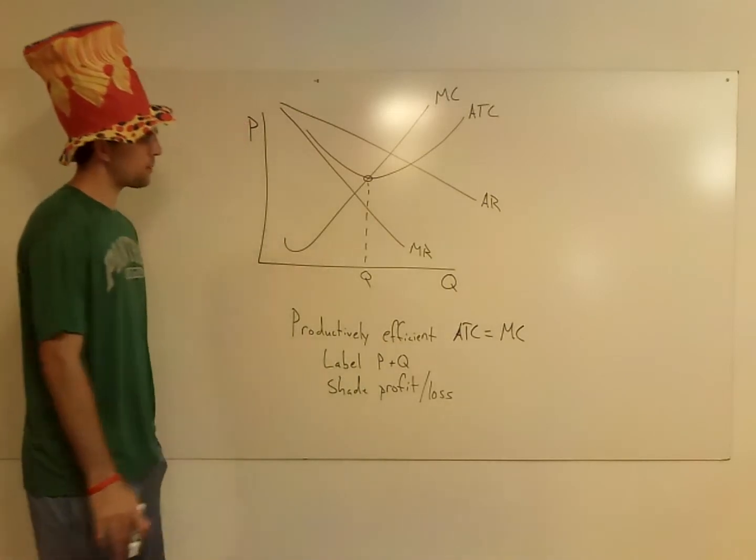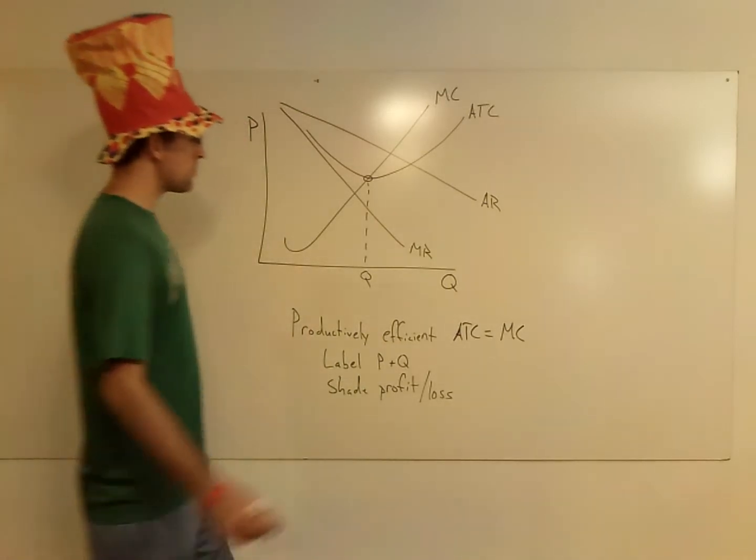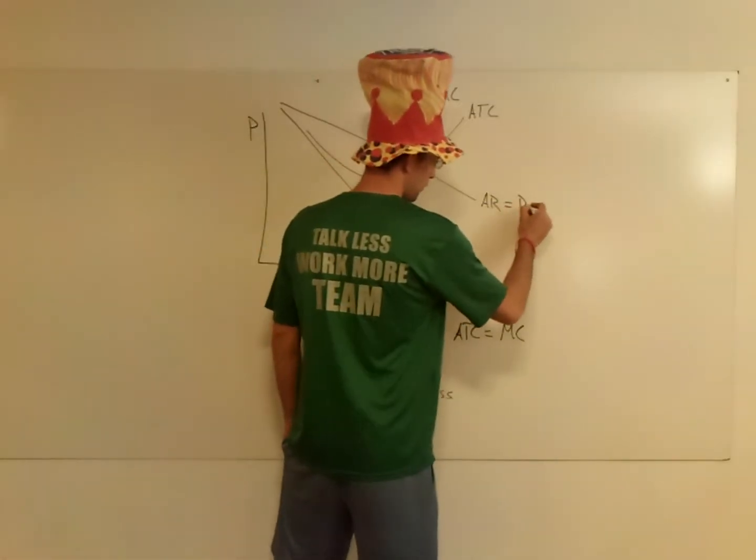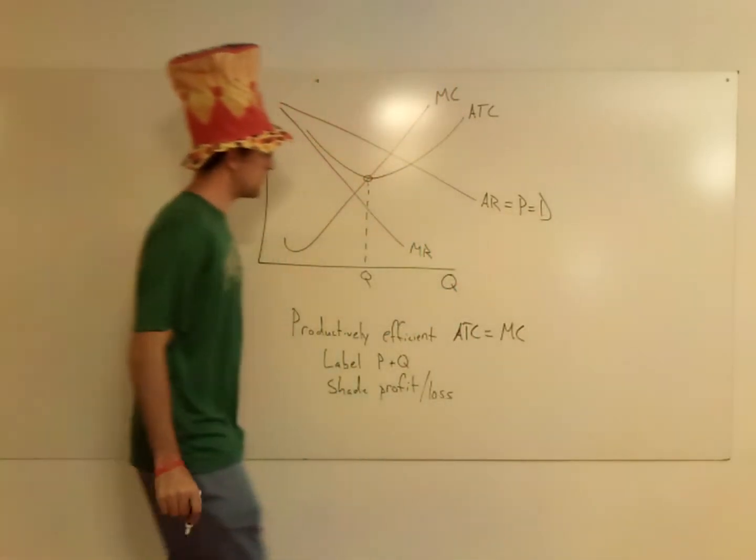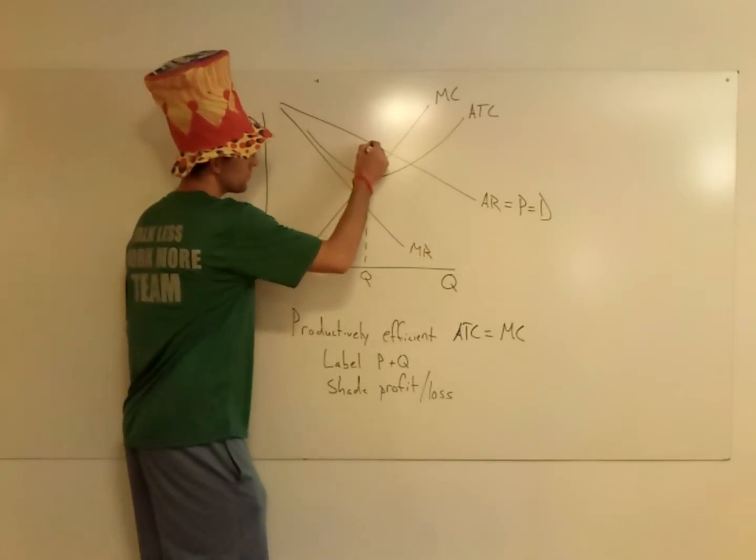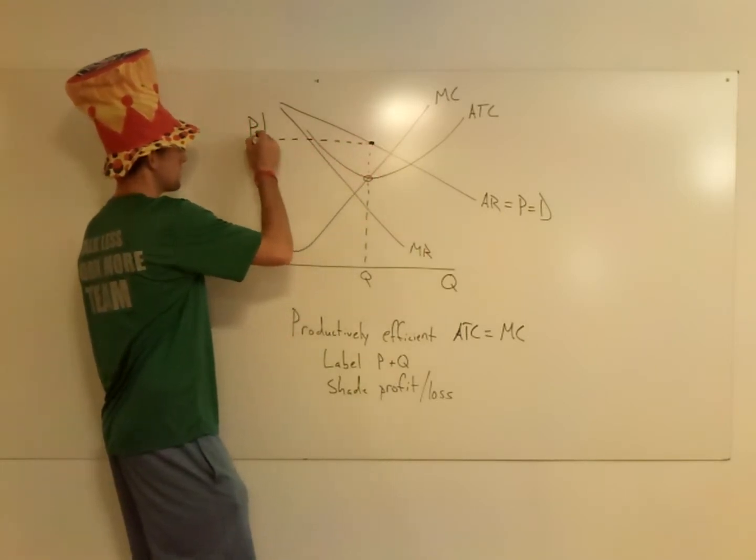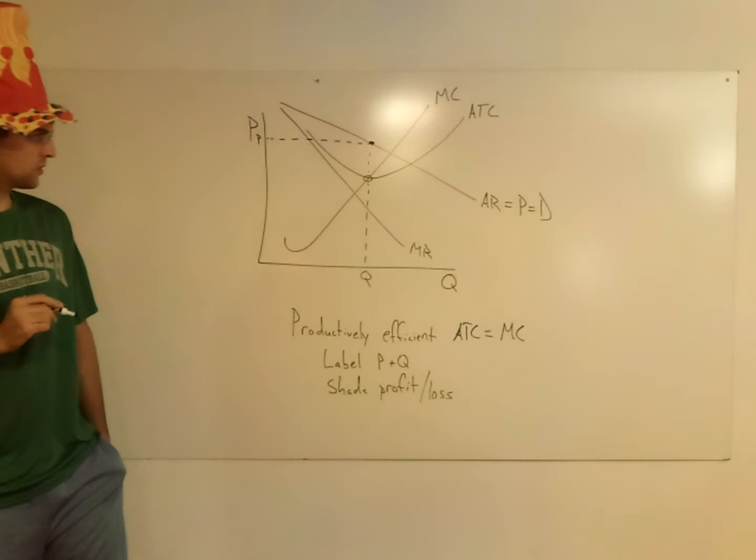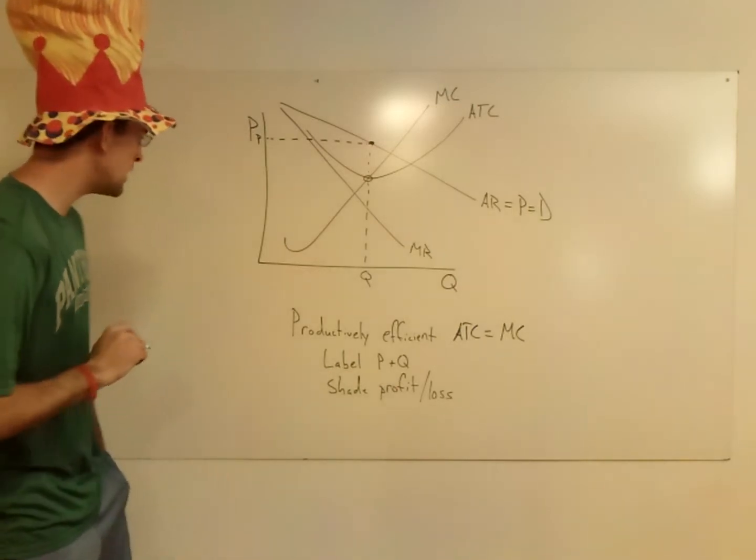Now, the question is about the price. And you've got to remember, the AR equals your price equals your demand curve for the monopoly. So you have to go up to the AR curve, like so. And I get my P. So there I have my price and I have my quantity.